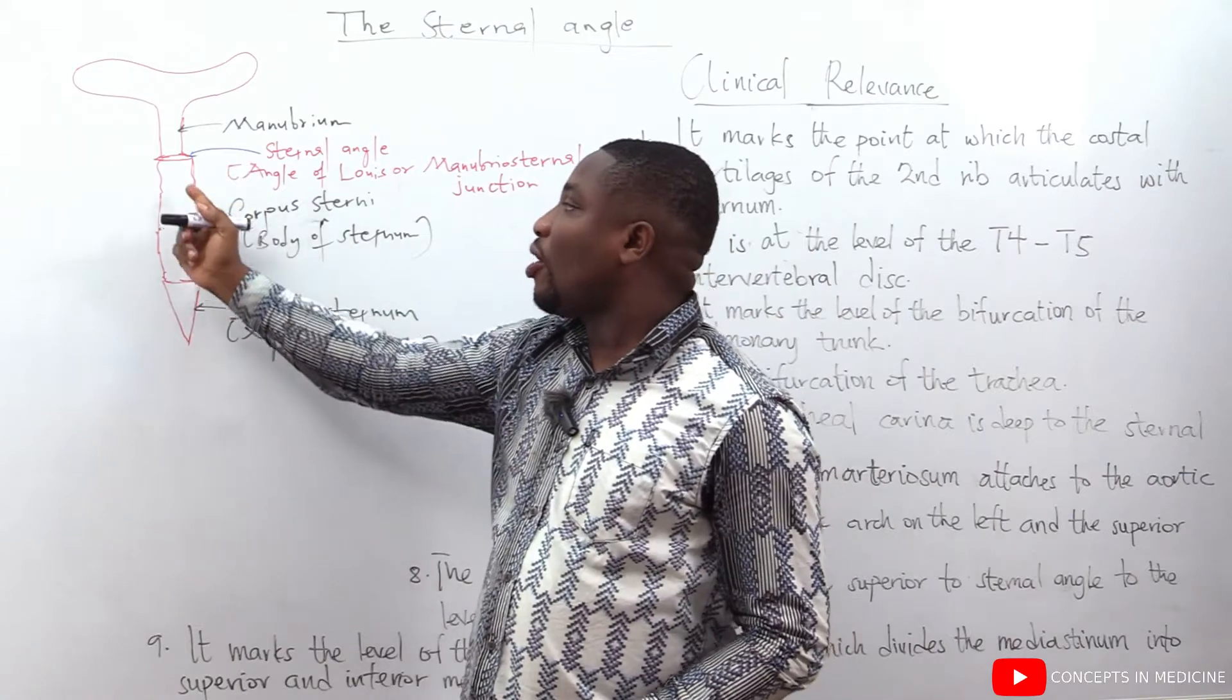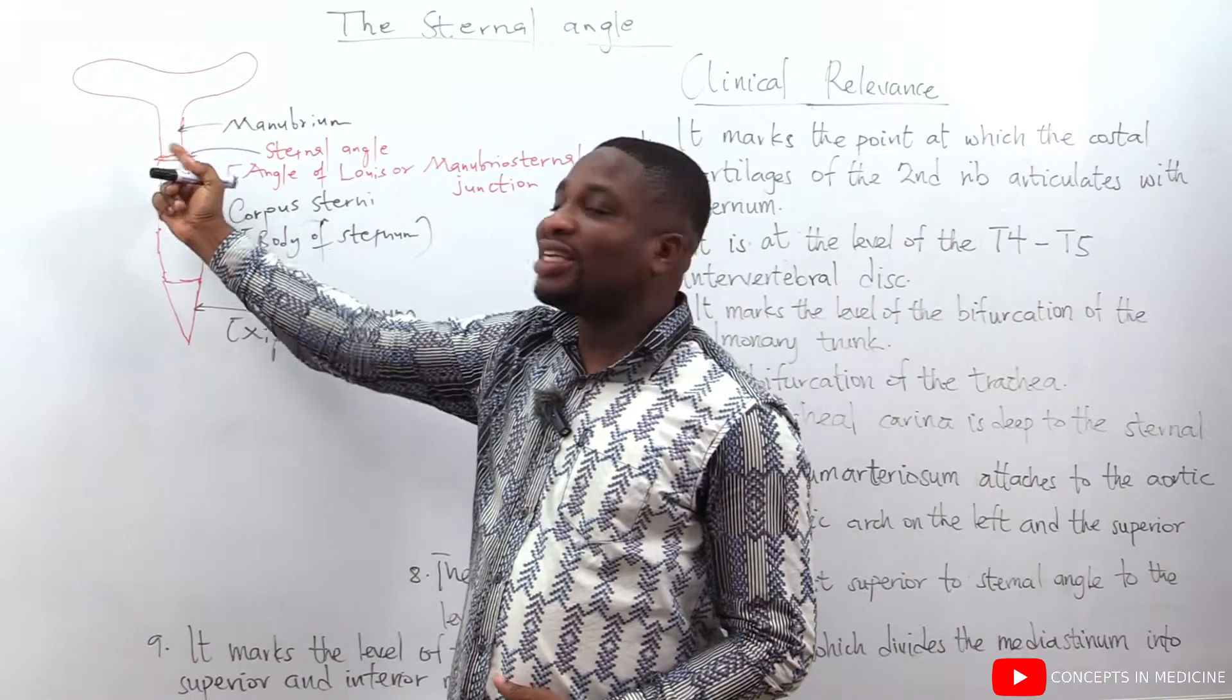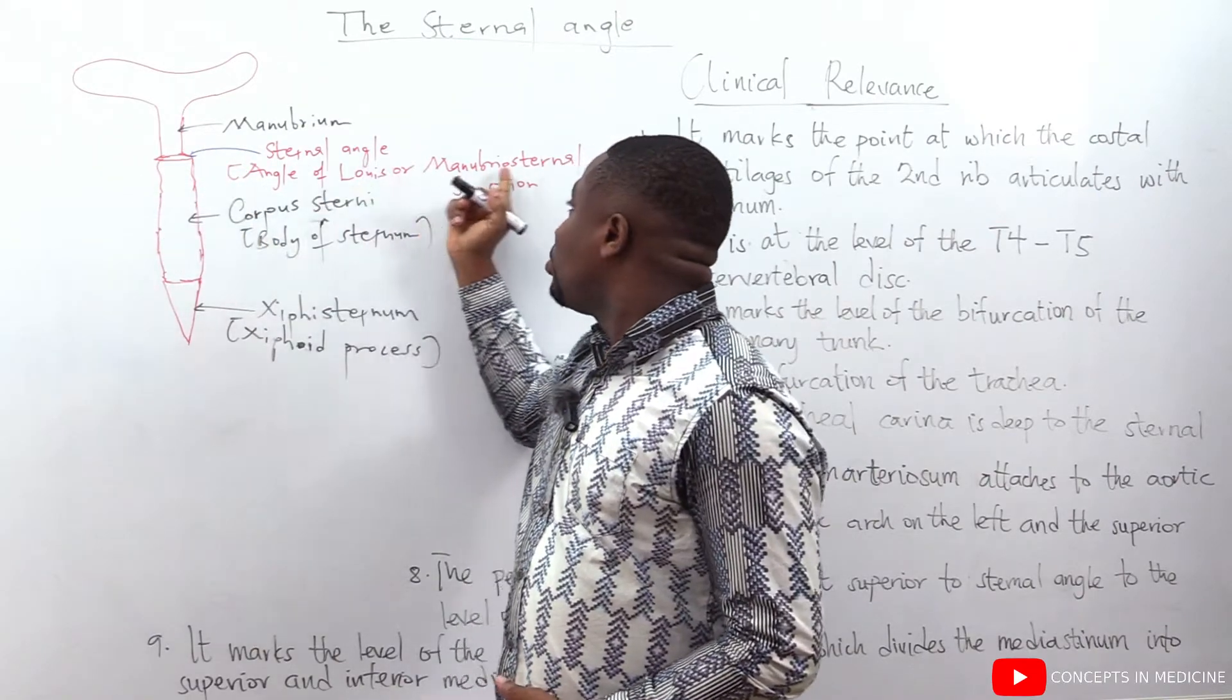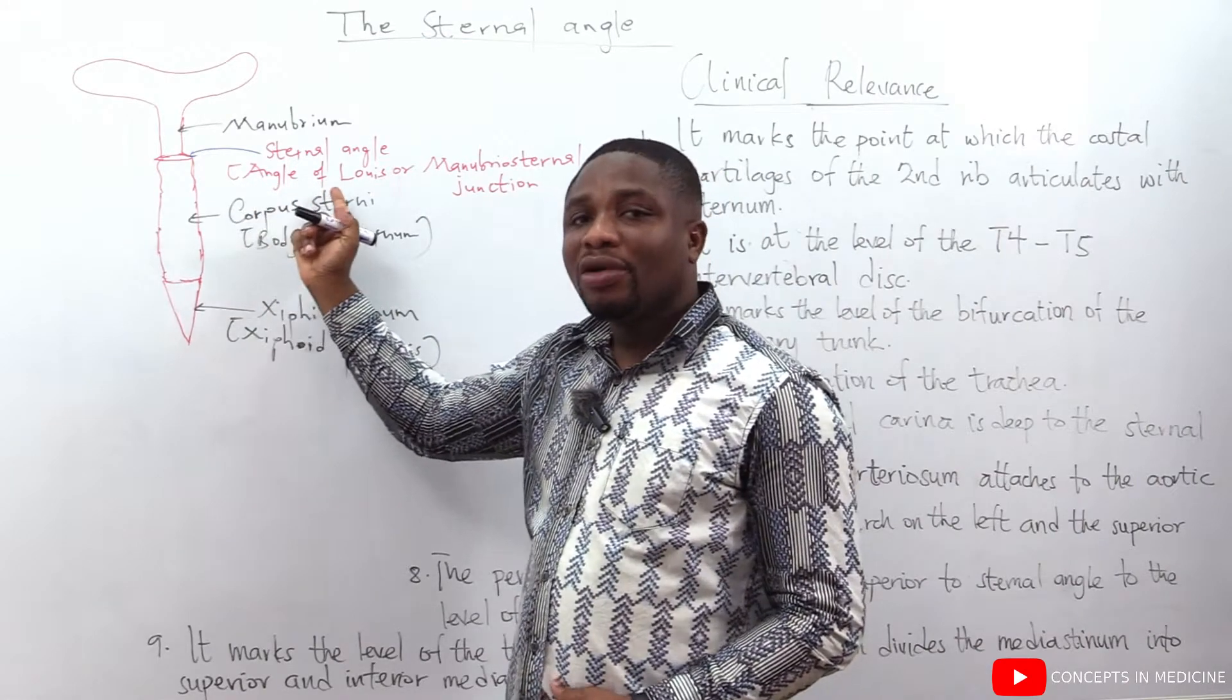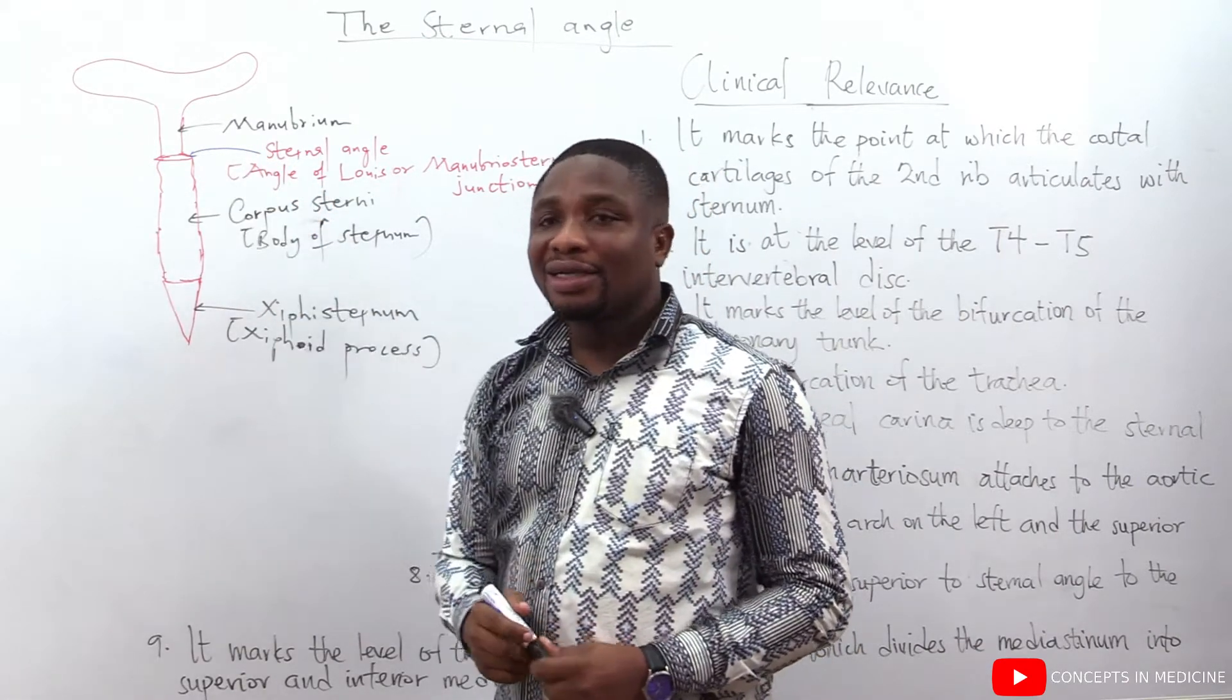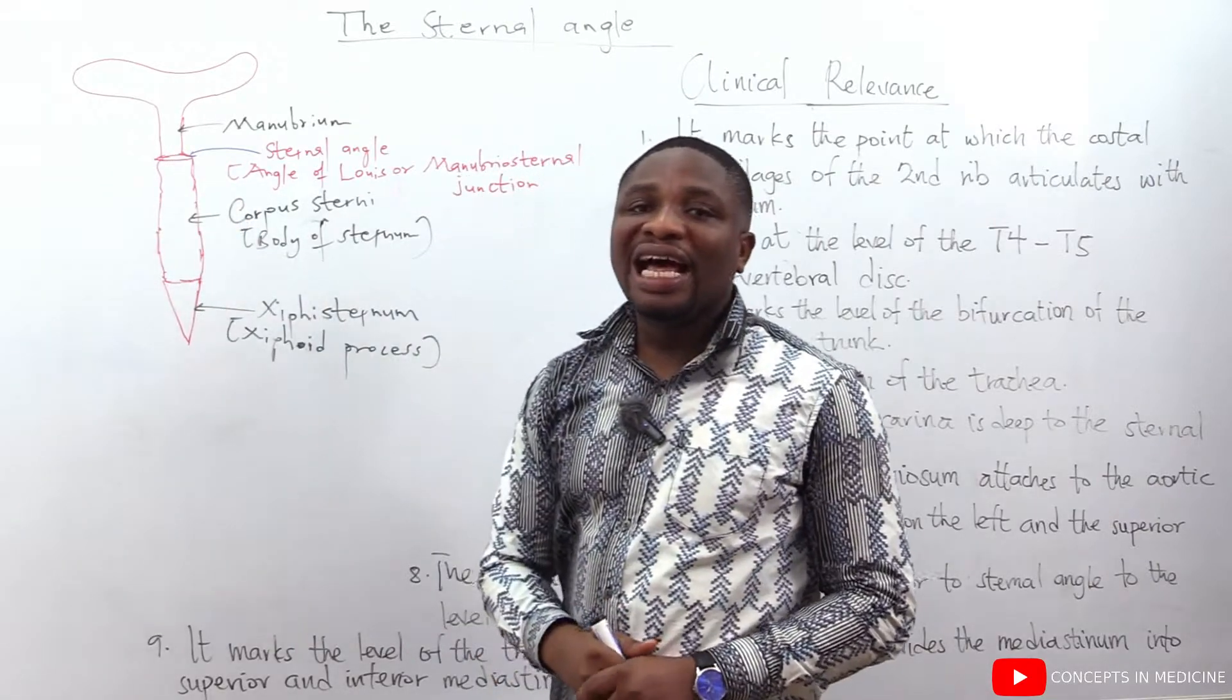If you move up, the corpus sterni or the body of the sternum meets the manubrium at a junction. And that junction, we call it the manubriosternal junction or what we call the angle of Louis or what we call the sternal angle. So this we are seeing here is what we call the sternal angle.